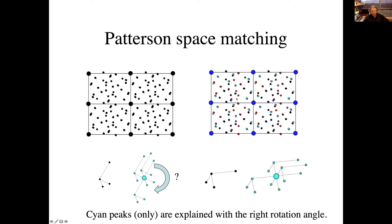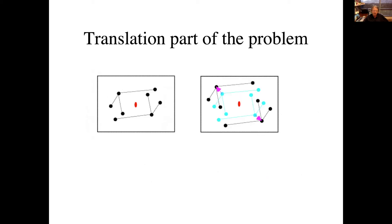Not all peaks are explained, because the molecule is only rotated properly — it's not translated properly yet. Some peaks aren't explained. So one divides this six-dimensional rotation and translation problem into two parts: the three-dimensional rotation part I just explained, and separately a way to optimize a function to find the optimum translation. Once you have the proper rotational solution, you move it around and try to explain those additional peaks. There may be symmetry in the crystal; you can try different rotations and then solve the translation problem.